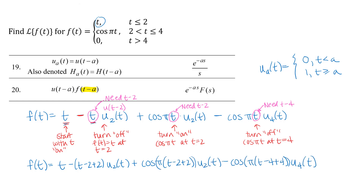I've gone ahead and written my function with t minus 2 and t minus 4 where I want them to be. To balance that out, I had to add 2 and add 4 to keep balance so I'm not changing the actual function. Next I need to break that apart and use algebra to simplify, because I really don't want those plus 2 and plus 4 inside. For the first term, I can just multiply the minus sign through and distribute through the u sub 2 of t using the distributive property.